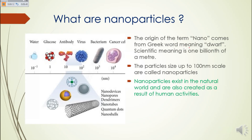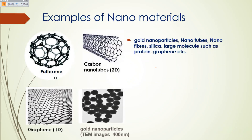Particles of 200 nanometer scale are called nanoparticles. Nanoparticles exist in the natural world and are also created by human activities. Examples of nano-devices and materials include nanopores, dendrimers, nanotubes, quantum dots, nanoshells, gold nanoparticles, nanofibres, silica, large molecules such as proteins, and graphene.